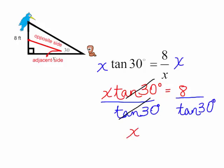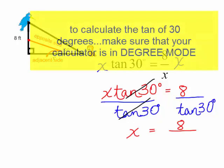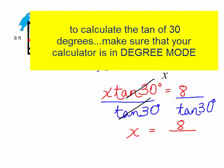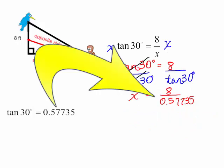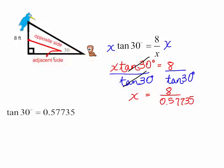I will have X is equal to 8 divided by the tangent of 30 degrees. Make sure your calculator is in degree mode. You will get that it is approximately 0.57735. I did round this. So this is approximately that. I will go back to my calculator. I will have 8 divided by 0.57735. And so X is approximately 13.856.